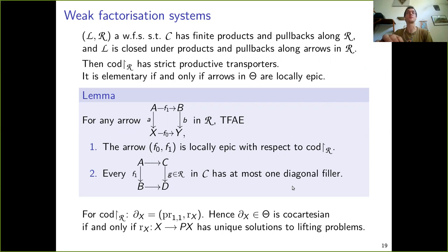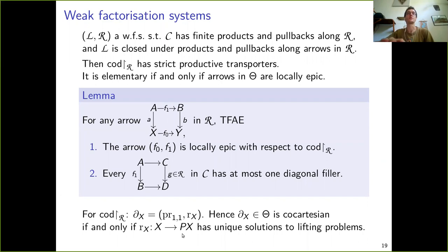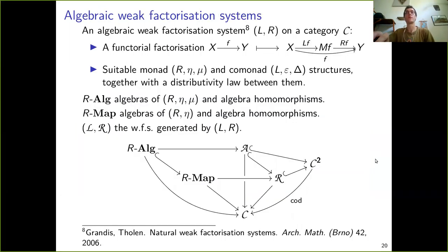Applying this theorem to a fibration coming from a suitable WFS, the only condition for it to be elementary is that arrows in Θ must be locally epic. In a fibration of this form this happens if and only if the upper component f_1 of the arrow has unique solutions to diagonal filling problems. This means that weak factorization systems from the semantics of the identity type cannot be elementary in general, because there we have multiple solutions to lifting problems for the reflexivity. But this holds only for full comprehension categories.